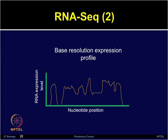The RNA-seq method has a dynamic range greater than 8,000-fold to quantify gene expression changes. Therefore, RNA sequencing is very useful for discovering new transcripts, identifying mutations, deletions, and insertions, as well as splicing alternatives.